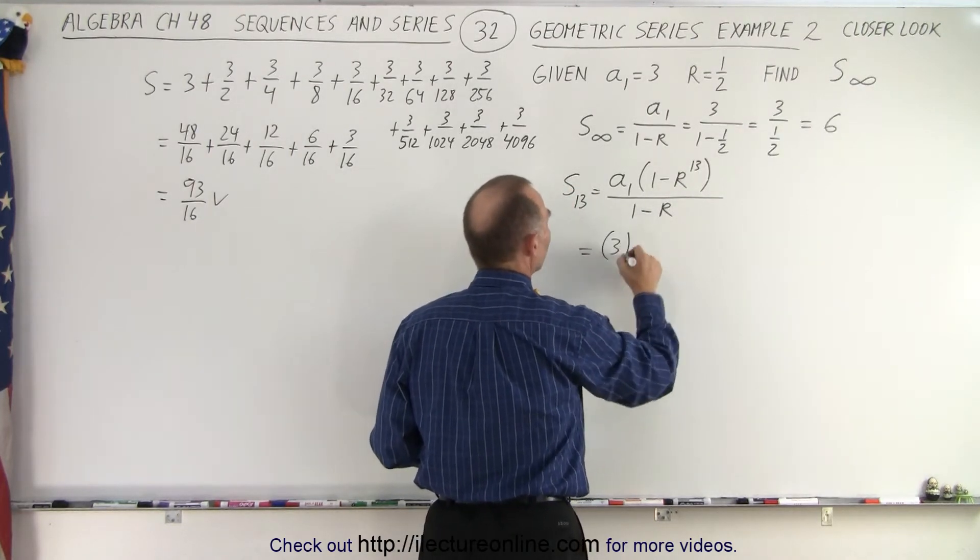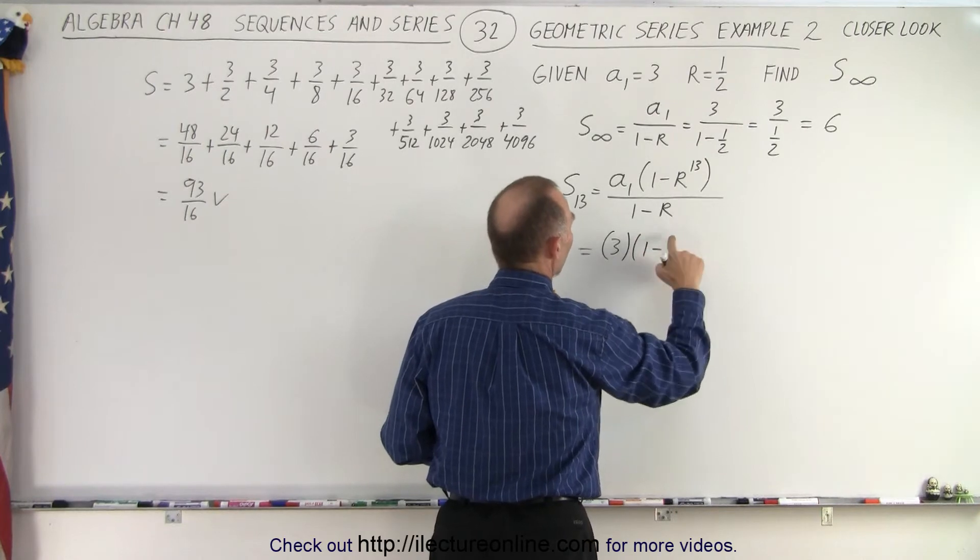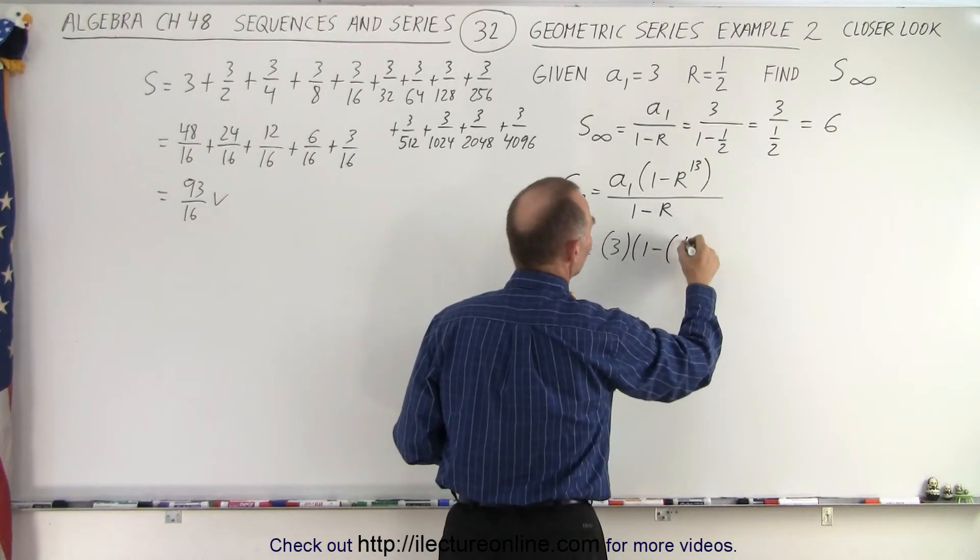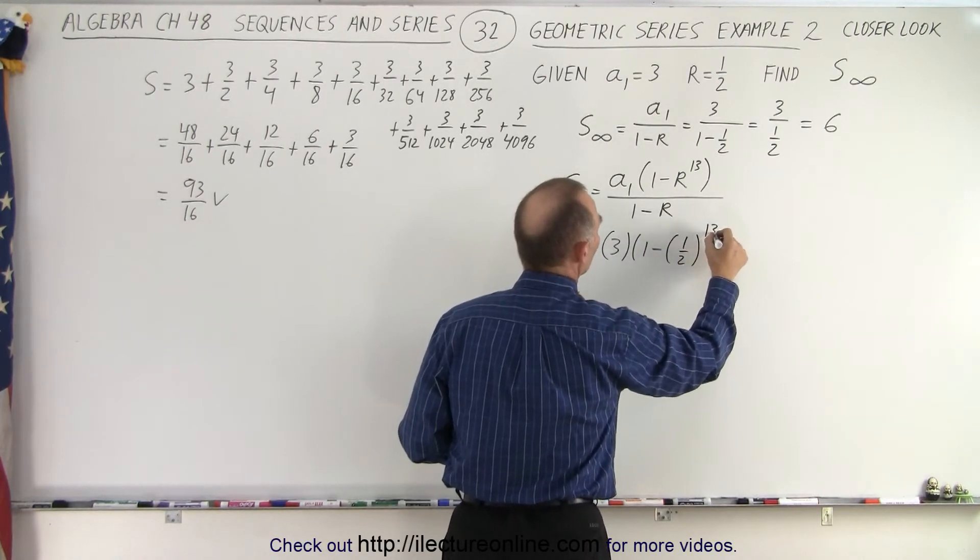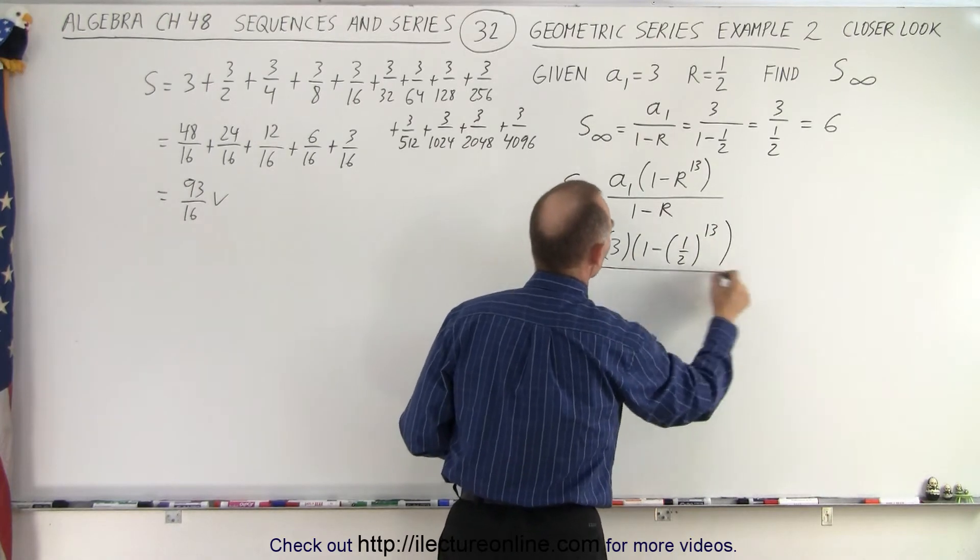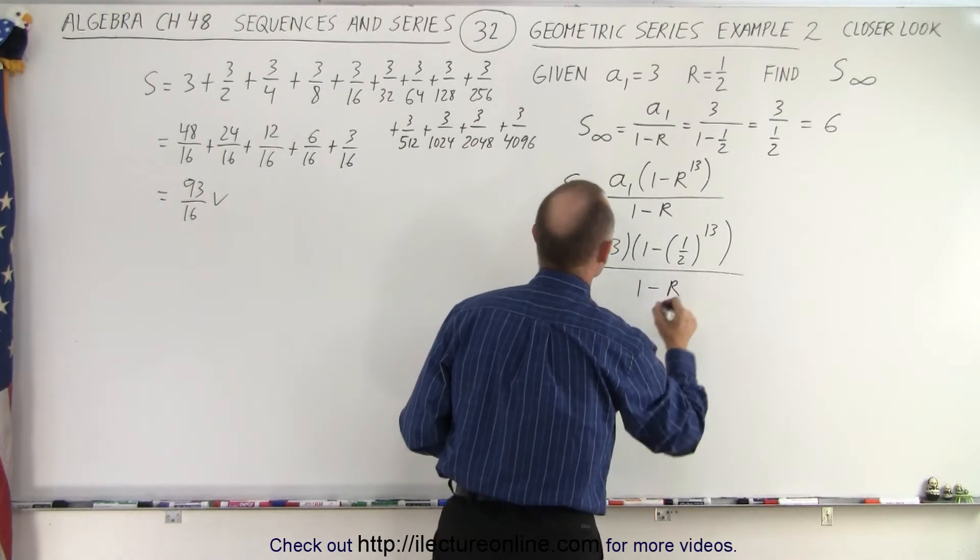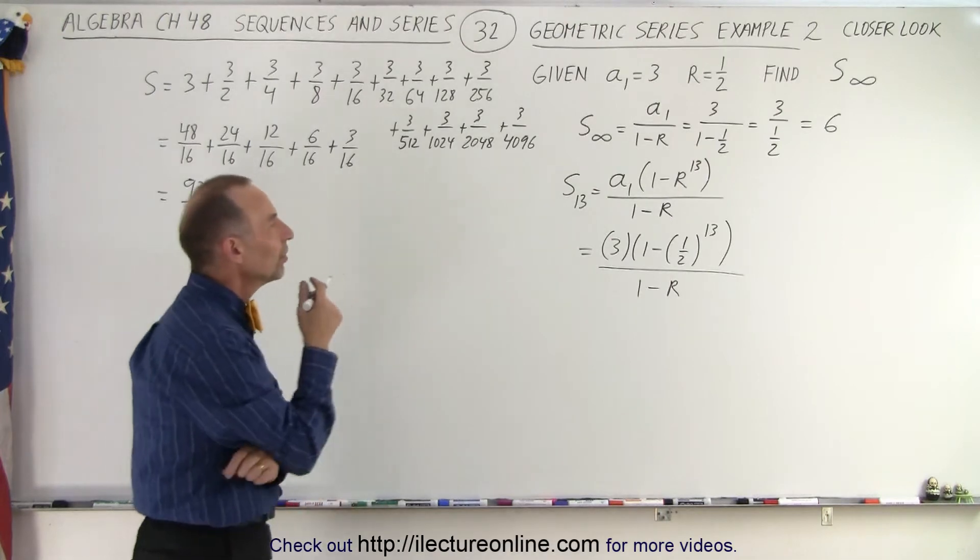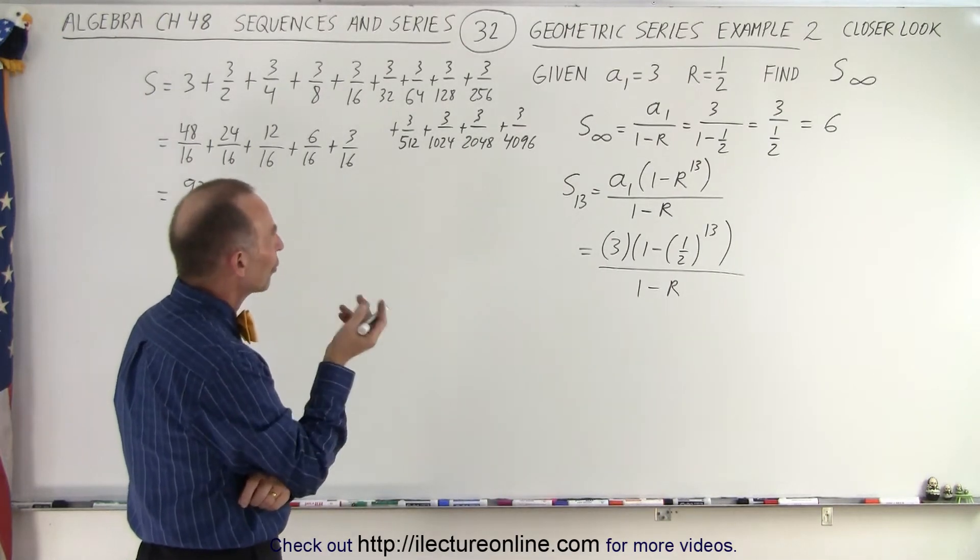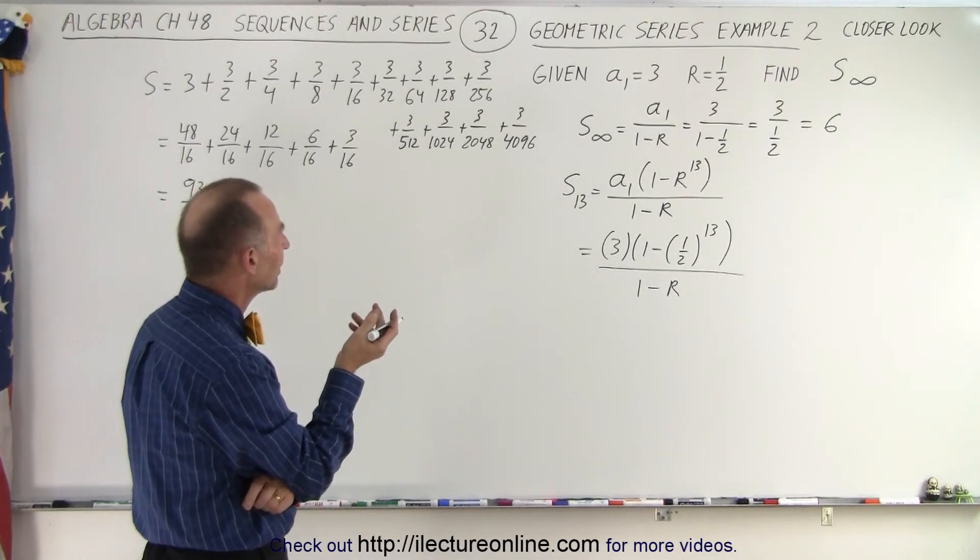A1 is equal to 3 times 1 minus the common ratio. The common ratio in this case is 1 half. 1 half raised to the 13th power all divided by 1 minus R. Alright. What is 1 half to the 13th power? Well let's see.